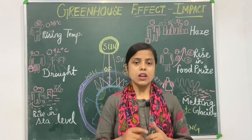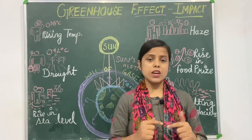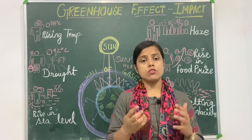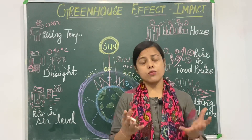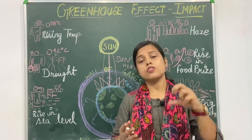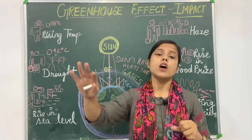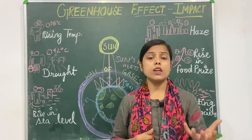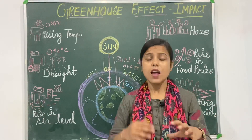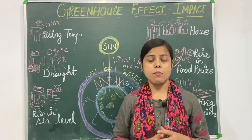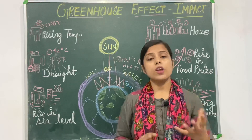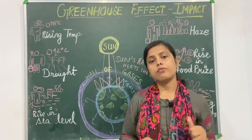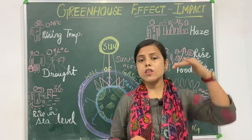As we have discussed, due to the increase in greenhouse gases, more gases are being trapped and less heat is radiated back. More and more heat is trapped, so what happens? The temperature of the earth goes high.